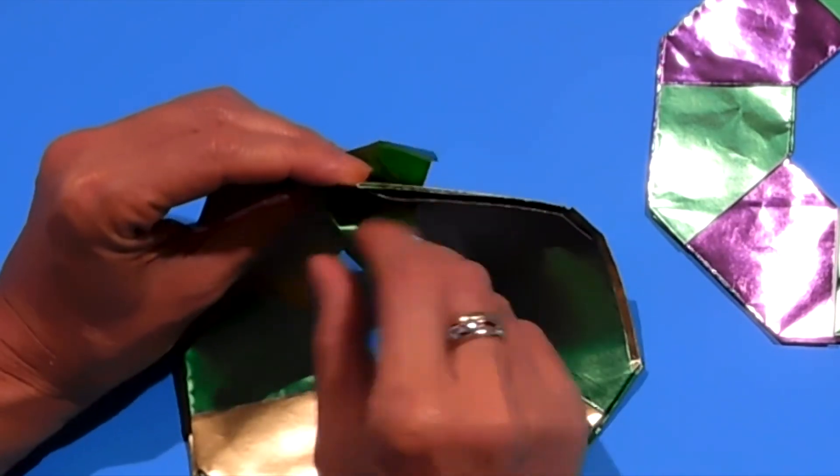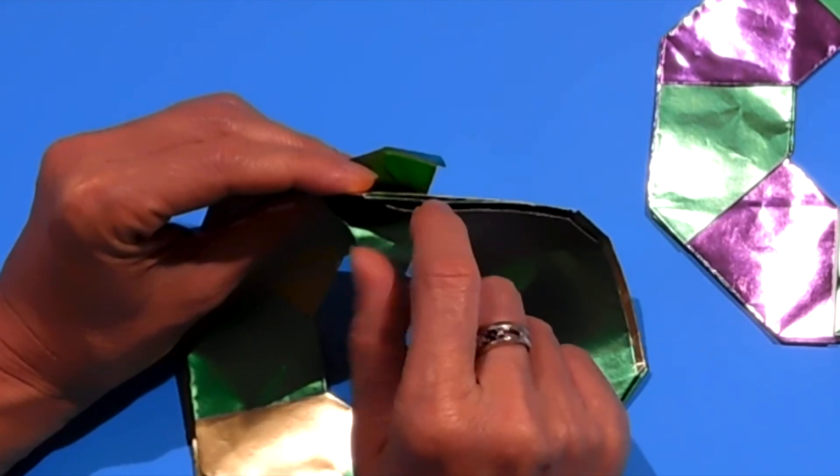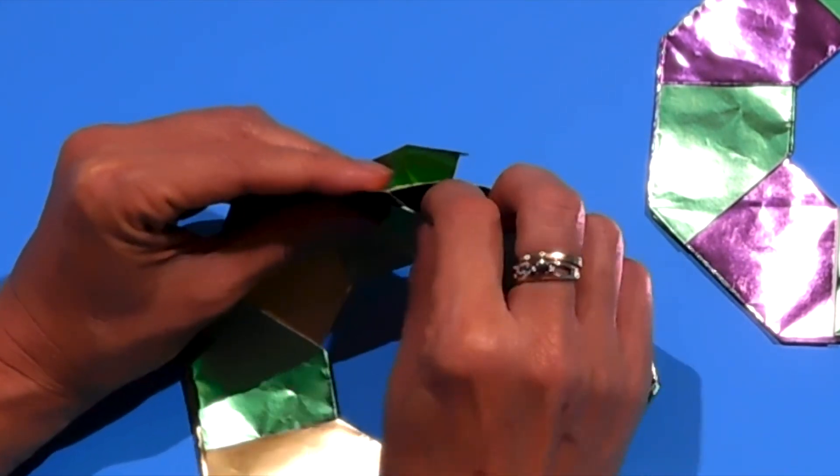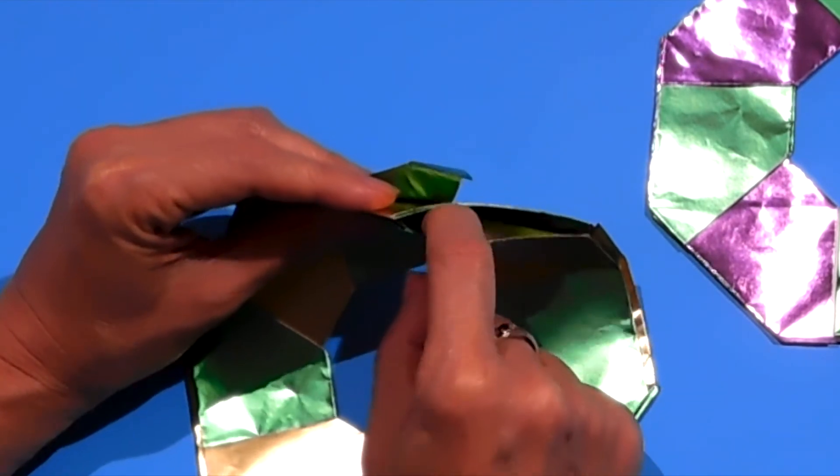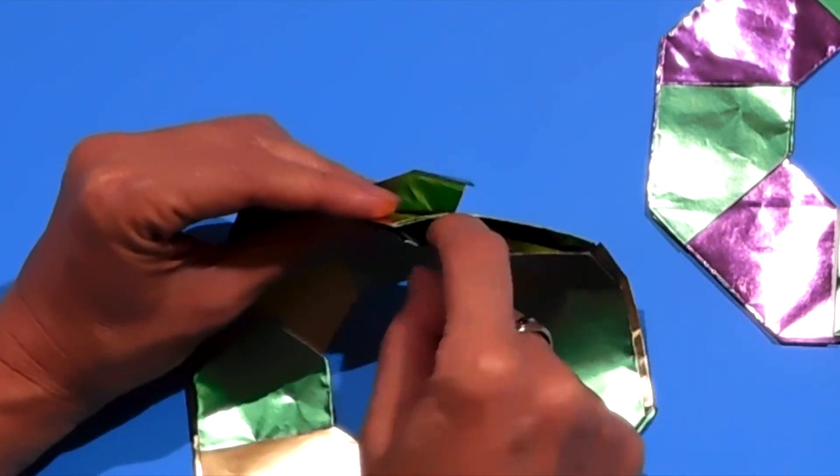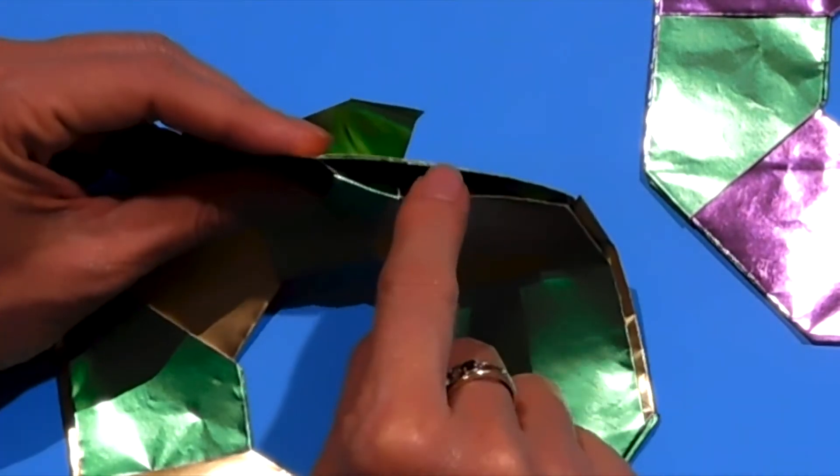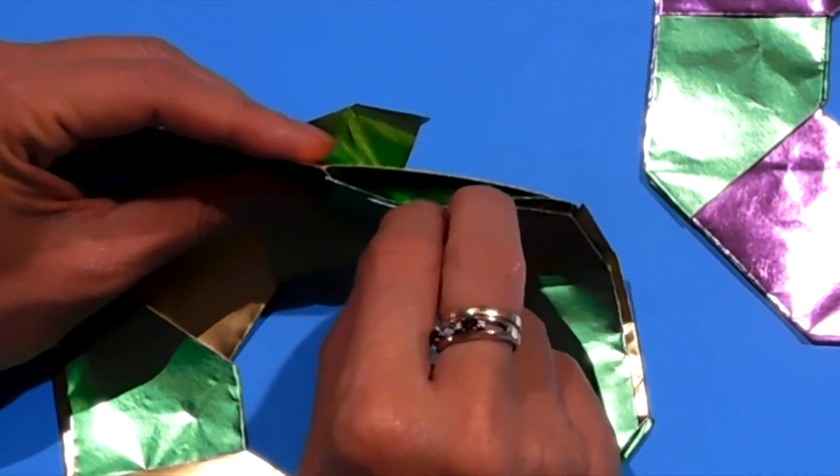And the last piece is a little different. There are one, two, three flaps. You will tuck the piece layer. Tuck the little triangle right into the first layer. The top layer. And then here the second layer. And the third layer.